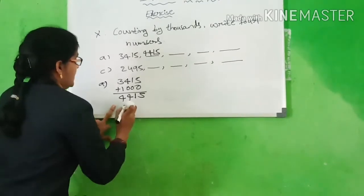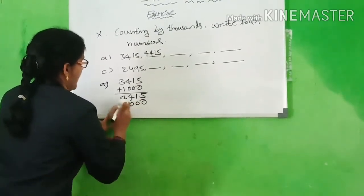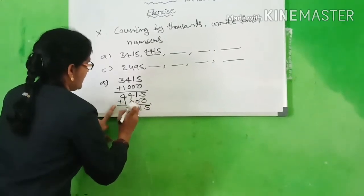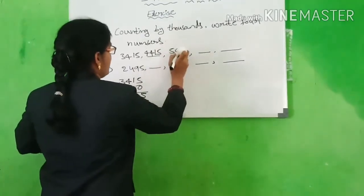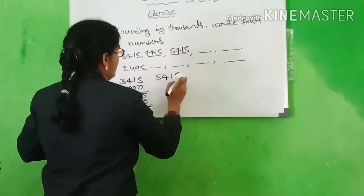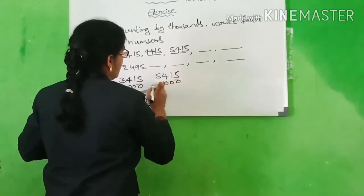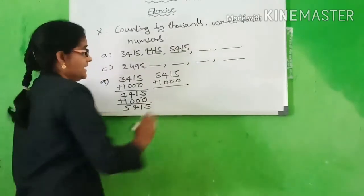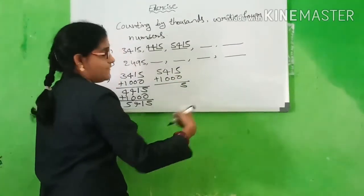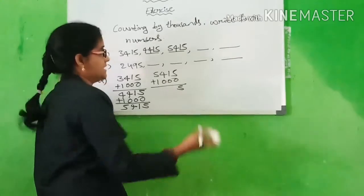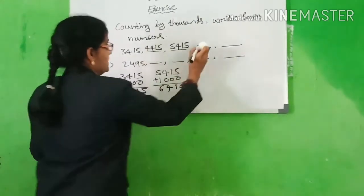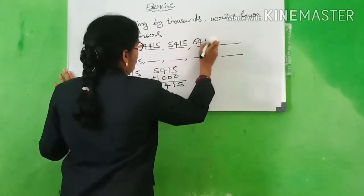Next, we have to add 1000 to 4,415: 5, 1, 4, 4 plus 1 is 5. We get 5,415. Next, 5,415 plus 1000: 5, 1, 4, 5 plus 1 is 6. We get 6,415.